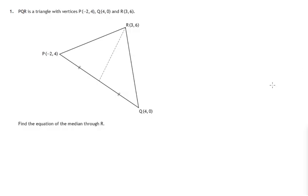Hi, Mr Cosi here. In this question we're faced with a triangle PQR. We know the three vertices, we know their coordinates, and we're asked to find the equation of the median, that's the line through this vertex R, going over to the midpoint of the opposite side.